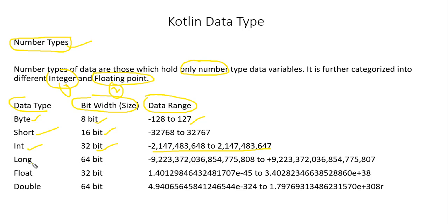After int, we have long, which is 64 bits — double the size of integer — and the range shows it can hold a very large amount of data. Similarly, for floating point, we have two special data types: float and double. Float is 32 bits.